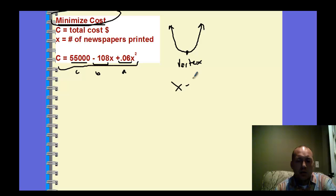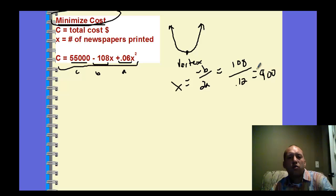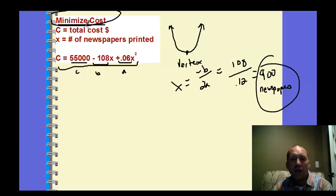By using x equals negative b over 2a. So negative b is going to be 108 divided by double a, so it's going to be 0.12, double the 0.06. If you divide those you get 900. So 900 is what you want to sell to minimize your cost. There's the x value. Now if you want to find the y value, you just take and plug 900 in for x right here and you solve it. The cost would be $6,400. That's how much it would cost to print 900 newspapers.